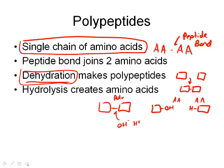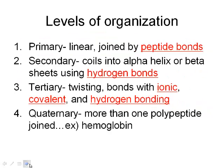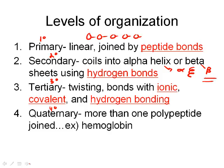There are four levels of protein organization: primary, secondary, tertiary, and quaternary. Primary is the simplest — just a linear chain of amino acids joined by peptide bonds. Secondary structure is when those polypeptide chains start coiling into an alpha helix, which looks like a coil, or folding into a beta sheet, which looks like a series of straight-line arrows.